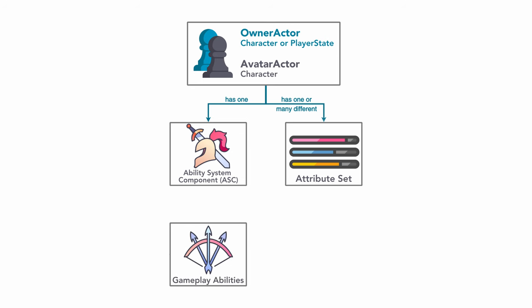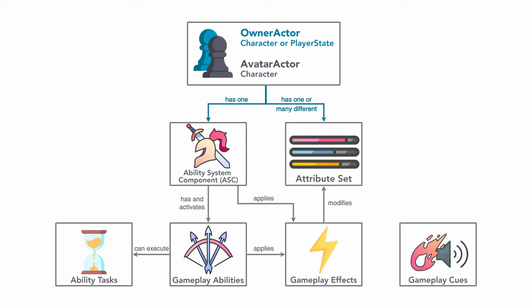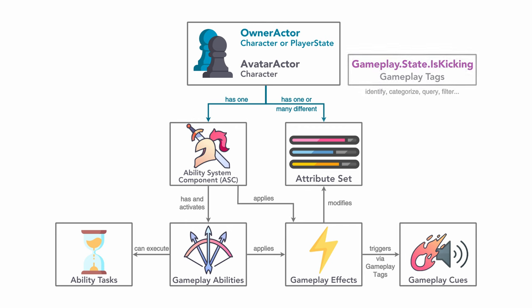The Owner Actor can have a single or many attribute sets. The attribute set defines and manages changes to attributes, which are basically floats that can represent stats like Health, Stamina and so on. A gameplay ability can be anything an actor can do — for example, sprinting, sneaking, picking up items or special skills. They can be activated by the ASC once they have been granted. Gameplay abilities can execute ability tasks that enable them to run actions in parallel and across multiple frames. Gameplay effects are usually applied through an ability to change an actor's attributes immediately or during a certain time span. Gameplay cues are cosmetics like explosions that use particle effects or sounds. Gameplay tags exist independently of the gameplay ability system — they are hierarchical labels used to identify, categorize, query and filter objects, or to inform about an ASC Owner state.